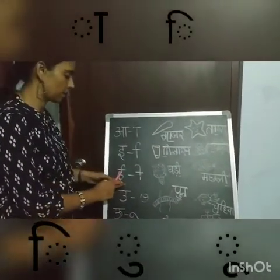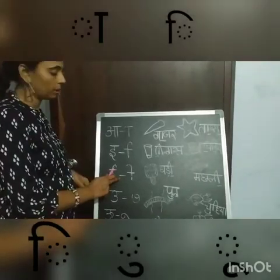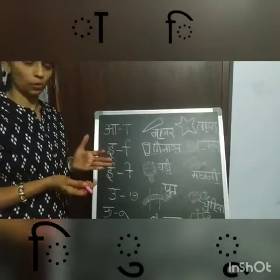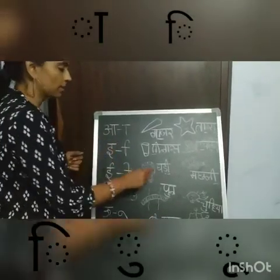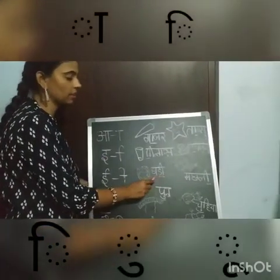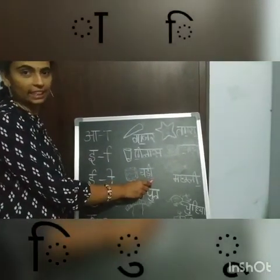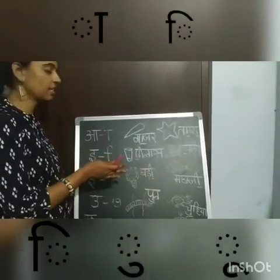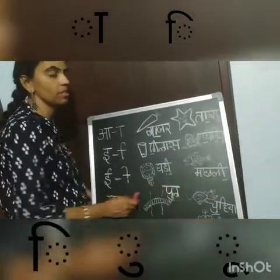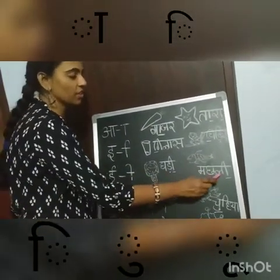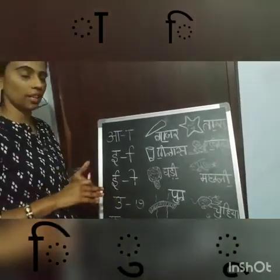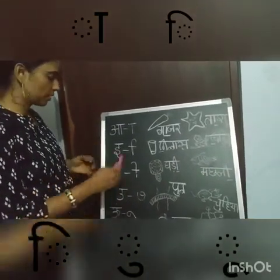The next Matra — Badi Matra. Badi Matra, always we will write on the right side of the letter. This is a watch, clock. Gadi — G, Laki Matra, D — Gadi. And next, Machali. Machali means fish. Macha, Laki Matra — Lee. Machali.